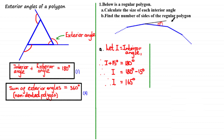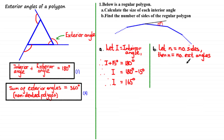The next part asks us to find the number of sides of the regular polygon. An important property is that the number of sides of a regular polygon is equal to the number of exterior angles of that polygon. So if we let N be the number of sides, then N is also equal to the number of exterior angles. Using equation 2 — that the sum of exterior angles equals 360 degrees — it means that 15 degrees added N times will equal 360 degrees, so the number of times we add 15 degrees equals the number of exterior angles.